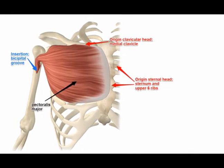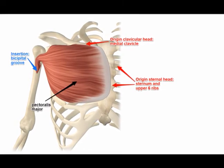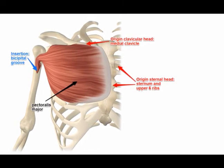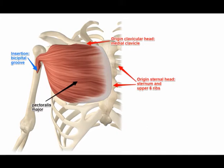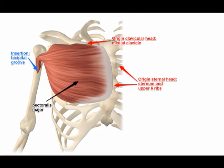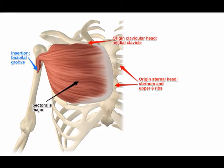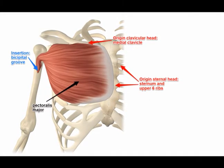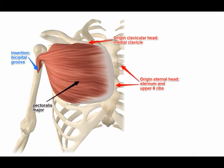the anterior sternum, costal cartilages 1 through 7, the sternal end of rib number 6, and the aponeurosis of the external oblique.